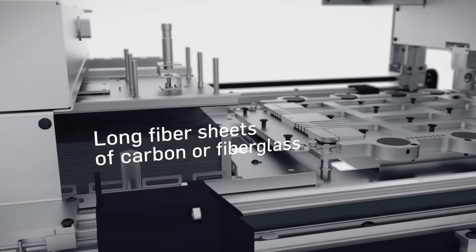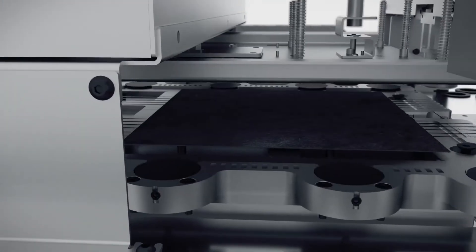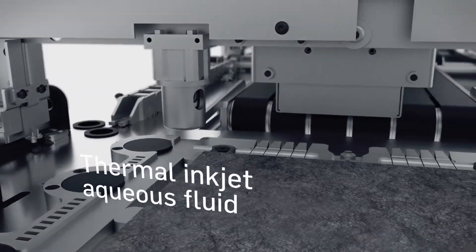The machine starts with a stack of sheets. The images of the layers are printed with an aqueous fluid onto fiber sheets.